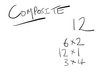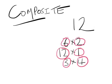Twelve is not limited. It has itself and one, sure — and if it just had that it would be a prime — but it's also got six by two and three by four, which means twelve is a composite number.